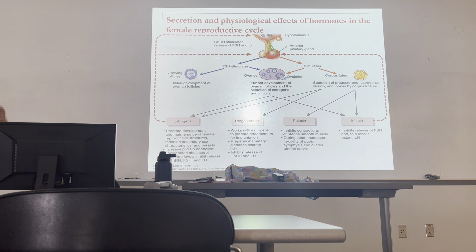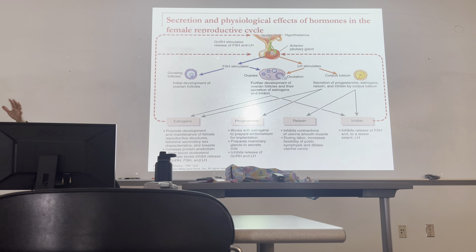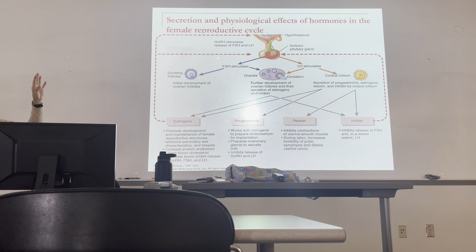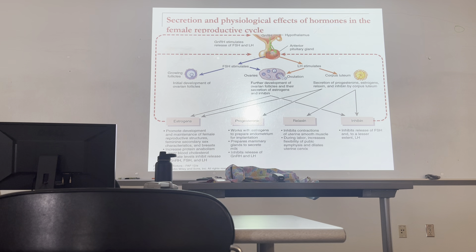Have you heard of false labor — Braxton Hicks contractions? The reason for false labor pains is that when the muscle is stretched, it responds by contracting. As the uterus grows, the muscle stretches and contracts — those are Braxton Hicks contractions. Sustained contractions are dictated by the baby: when it secretes cortisol and it reaches the mother, the mother responds by releasing increasing levels of oxytocin, producing regular contractions. That's real labor, as opposed to Braxton Hicks.